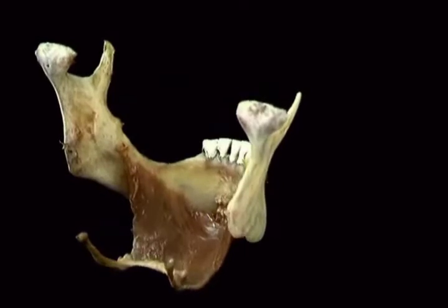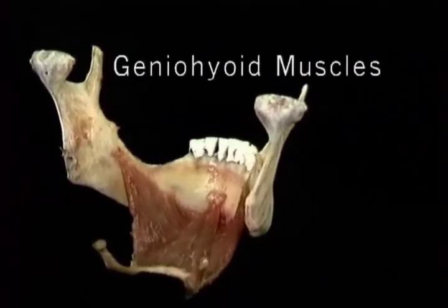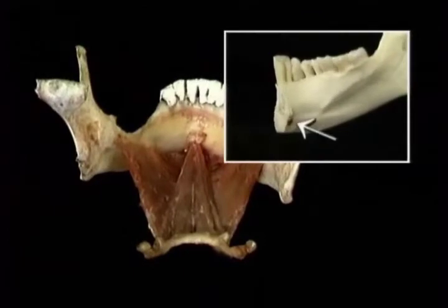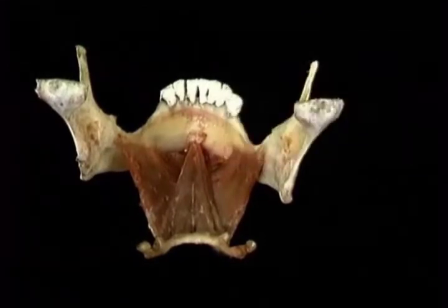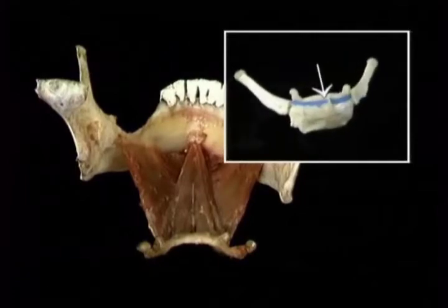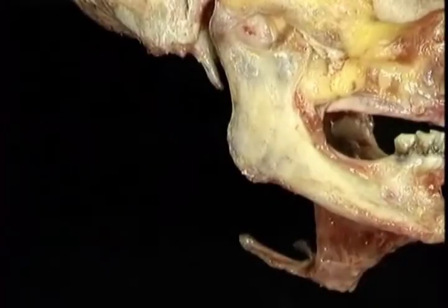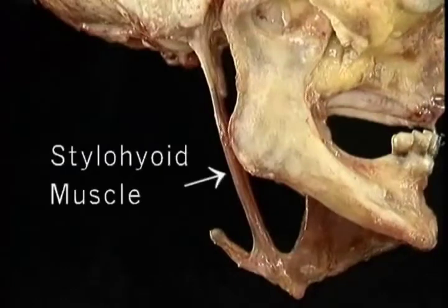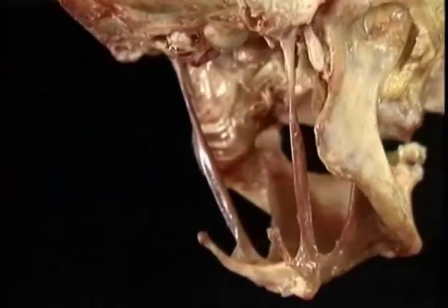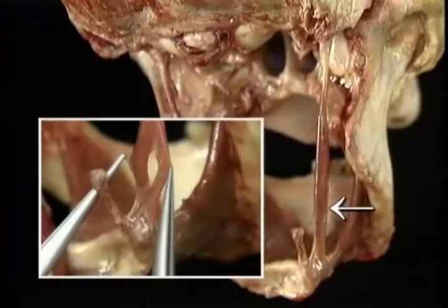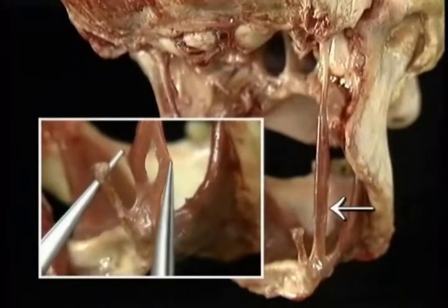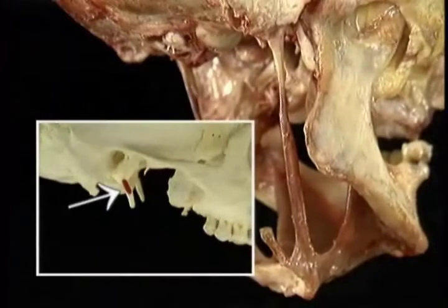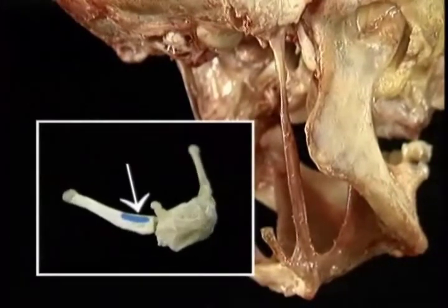Now we'll add the two geniohyoid muscles to the picture. They lie above the mylohyoid; on each side, the geniohyoid arises from the lower part of the mental spine and inserts on the body of the hyoid bone. Now we'll bring the base of the skull into the picture and add the stylohyoid, the muscle that pulls upwards and backwards. Here's the stylohyoid — it's a long, slender muscle. Just above its insertion there's an opening in the stylohyoid through which the digastric muscle passes. The stylohyoid arises from the lateral aspect of the styloid process and is inserted on the base of the greater horn of the hyoid bone.